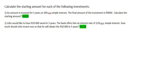In these questions, we're going to learn how to calculate the starting amount. For number one, an amount is invested for five years at 10% simple interest. The final amount of the investment is 9,000 Rand. Calculate the starting amount.